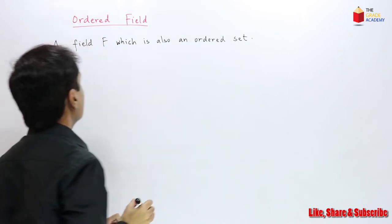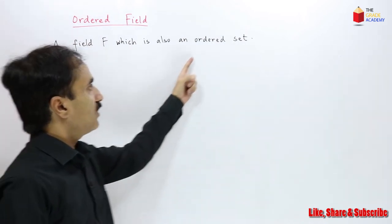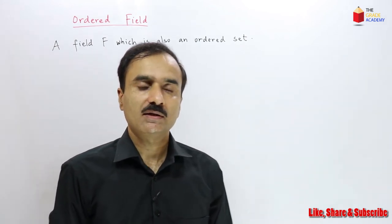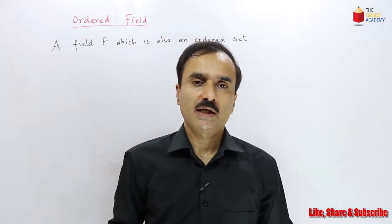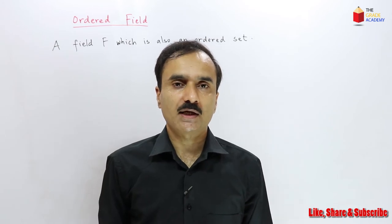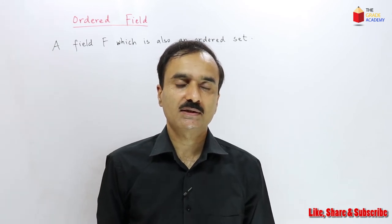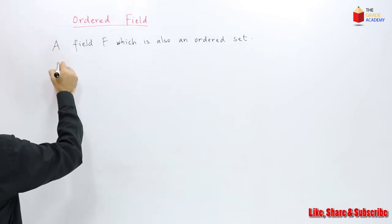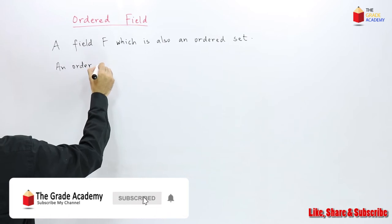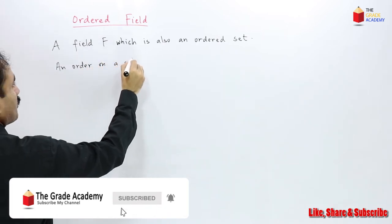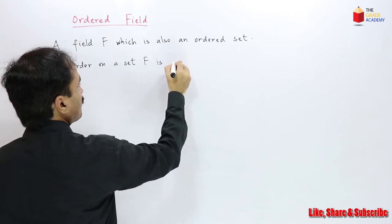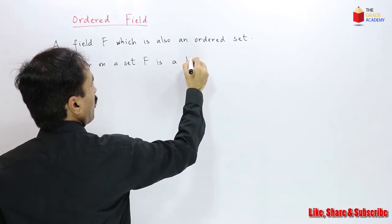An ordered field is a field which is an ordered set as well. Previously we have discussed that an order on a set is a binary operation which satisfies different conditions. An order on a set F is a binary operation.